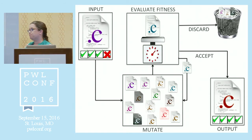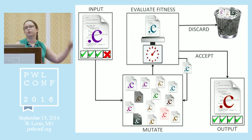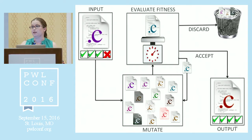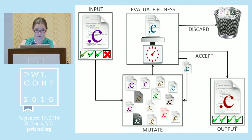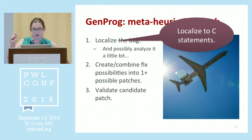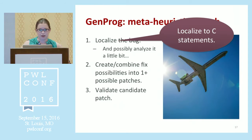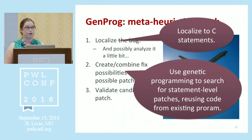The nice thing about manipulating a program at the abstract syntax tree level is that we'll never make a program that doesn't compile for syntax reasons — we avoid a whole lot of compilation failures. GenProg is localizing defects to statements — the grammar non-terminal in the C programming language — and then uses genetic programming to traverse the space of statement-level edits that reuse code from within the same program to try and fix the bug.